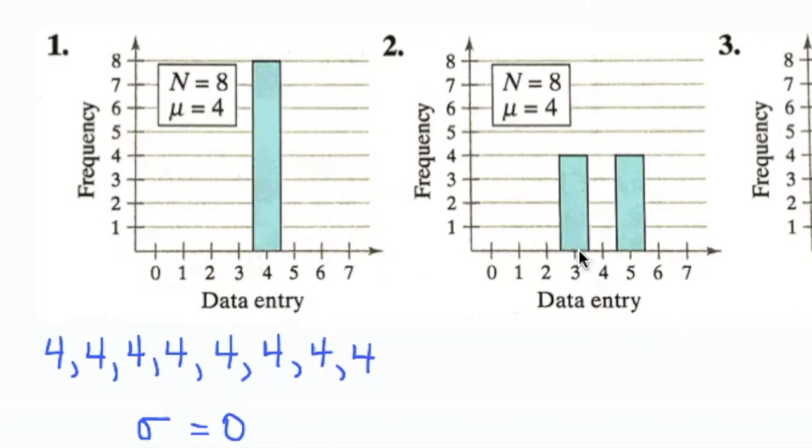In the next graph, our data set is composed of 3s and 5s. And the 3s, there are 4 of them. And the 5s, also, there are 4 of them. So we're told that our mean is still going to be 4. What's the standard deviation going to be this time?